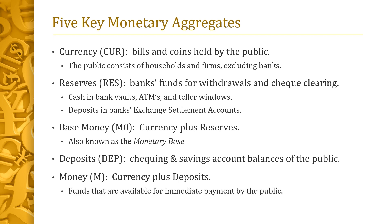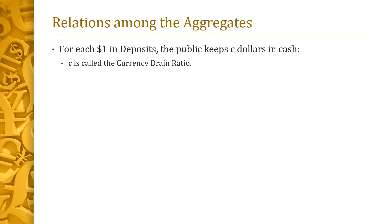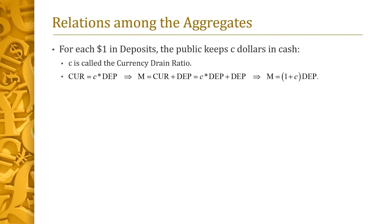This fits the economist's definition of money as the funds available for immediate payment by the public. We next derive relationships among the five monetary aggregates. We assume that for each dollar in deposits, the public sets aside C dollars in cash. The parameter C is called the currency drain ratio. This implies that currency CUR equals C times deposits DEP. Since money M equals CUR plus DEP, substituting gives us M equals the product of 1 plus C and deposits DEP.